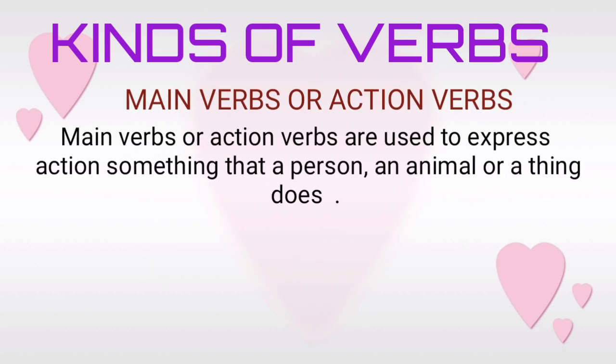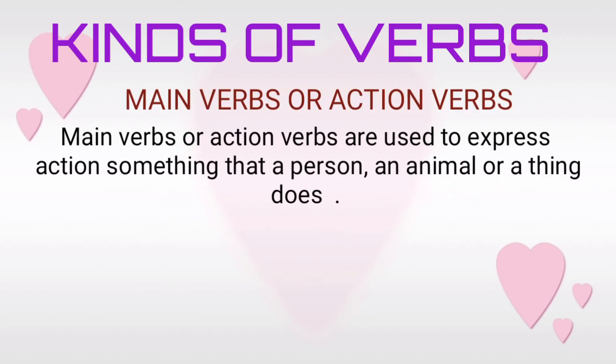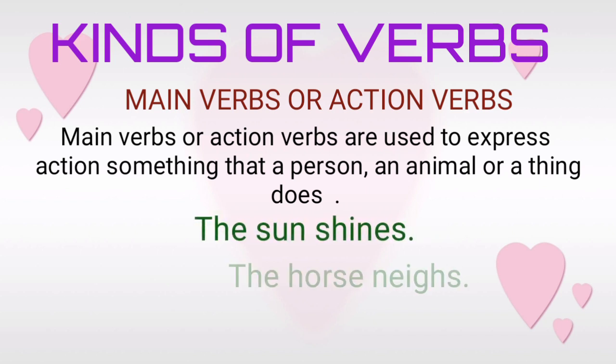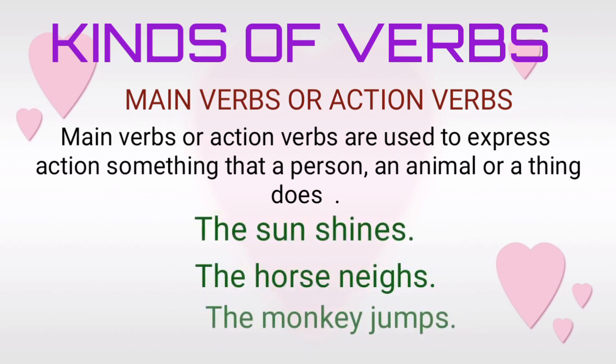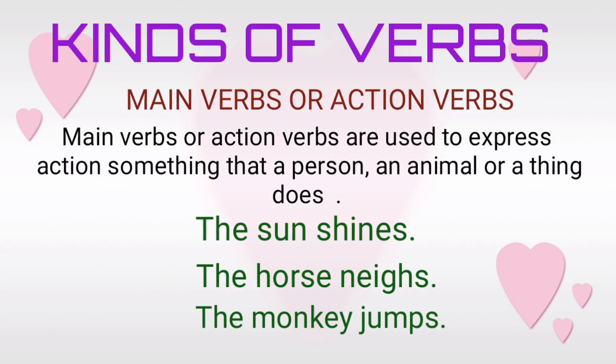Main verbs or action verbs are used to express action — something that a person, an animal or a thing does. Examples: The sun shines. The horse nays. The monkey jumps. Remember, the verbs shines, nays, and jumps express an action done by a person, an animal or a thing.